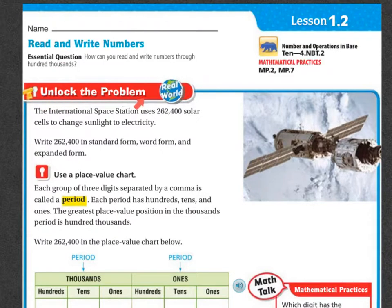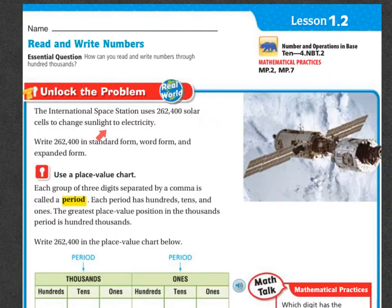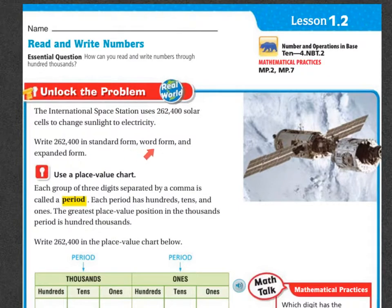So let's unlock the problem. The International Space Station uses 262,400 solar cells to change the sunlight to electricity. Write 262,400 in standard form, word form, and expanded form.